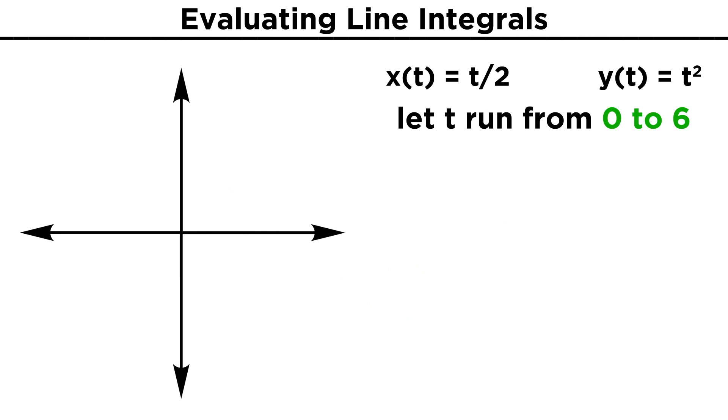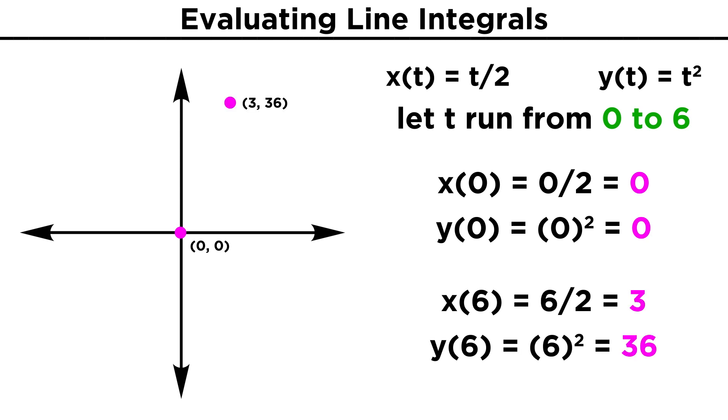Now let's say t runs from zero to six. We could plug these values into our parametric equations to get the starting and ending points on this curve for these values of t. For t equals zero, we get x equals zero and y equals zero. For t equals six, we get x equals three, and y equals thirty-six. For this range of t, we are left with this part of the curve between these two points.